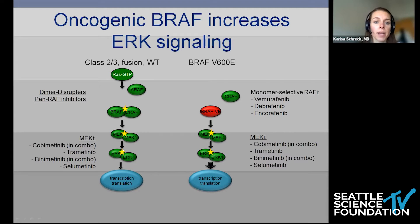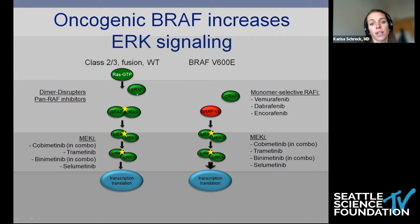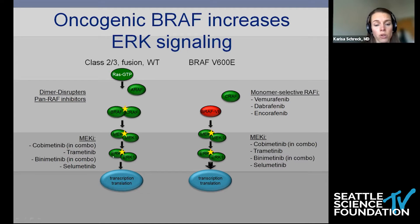For patients with class 2 or class 3 mutations, fusions, or wild-type BRAF, one might consider a dimer disruptor — something that interrupts this pairing — a pan-RAF inhibitor that will be effective against any of these RAF molecules, or a MEK inhibitor, either alone or in combination.